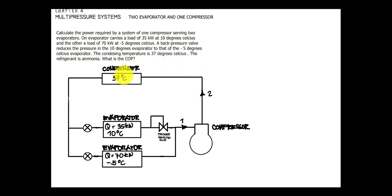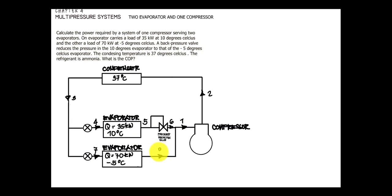After point 0.2 we go to the condenser, which will be point 0.3. After the condenser we have the expansion valve, giving us point 0.4 going to evaporator 1, then points 0.5, 0.6, 0.7, and 0.8. We have a mixing point which is the mix of points 0.6 and 0.8, and the outlet at 0.1 going to the compressor.